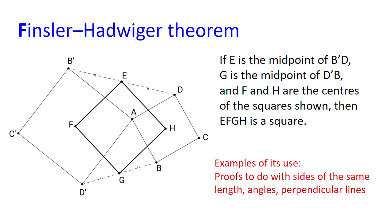First up we have the Finsler-Hadwiger Theorem. This states that if E is the midpoint of B'D and G is the midpoint of D'B, and F and H are the centers of the squares shown, then EFGH is a square.